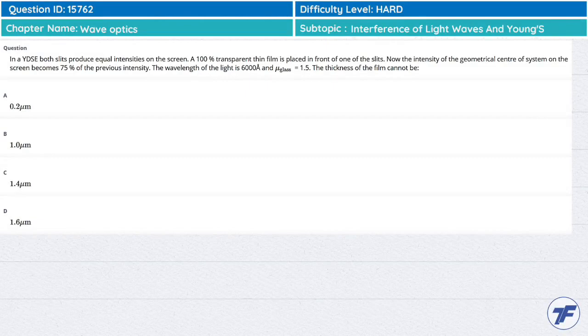In YDAC slit, slits produce equal intensities on the screen. A 100% transparent thin film is placed in front of one of the slits. Now the intensity at the geometrical center of the system on the screen becomes 75% of the previous intensity. The wavelength of the light is 6000 angstrom and μ of glass is 1.5. The thickness of the film cannot be...